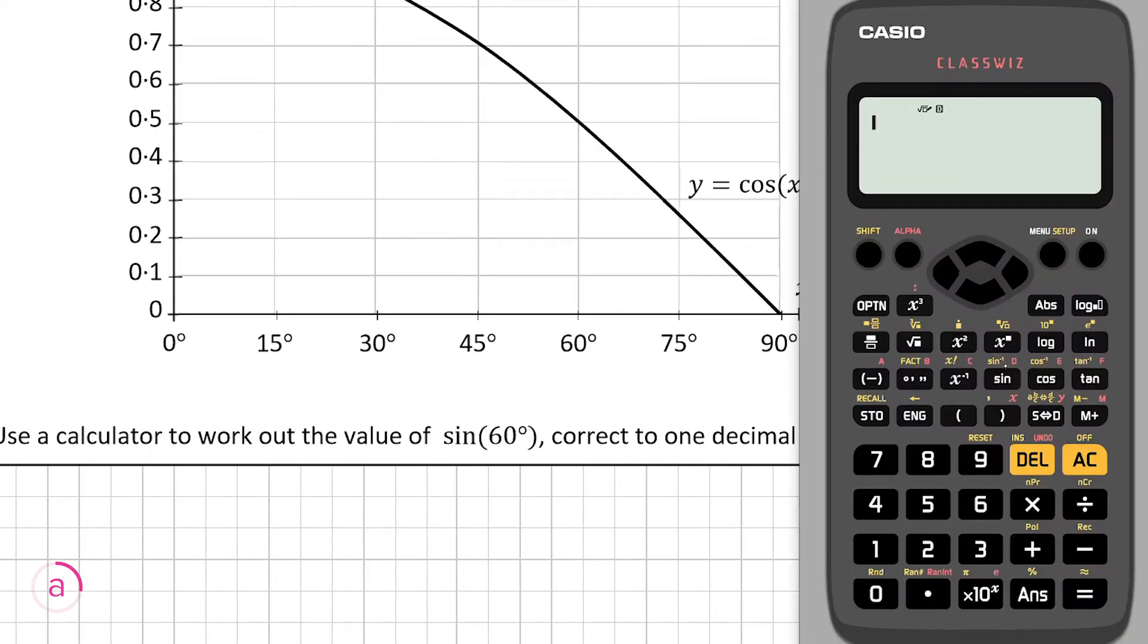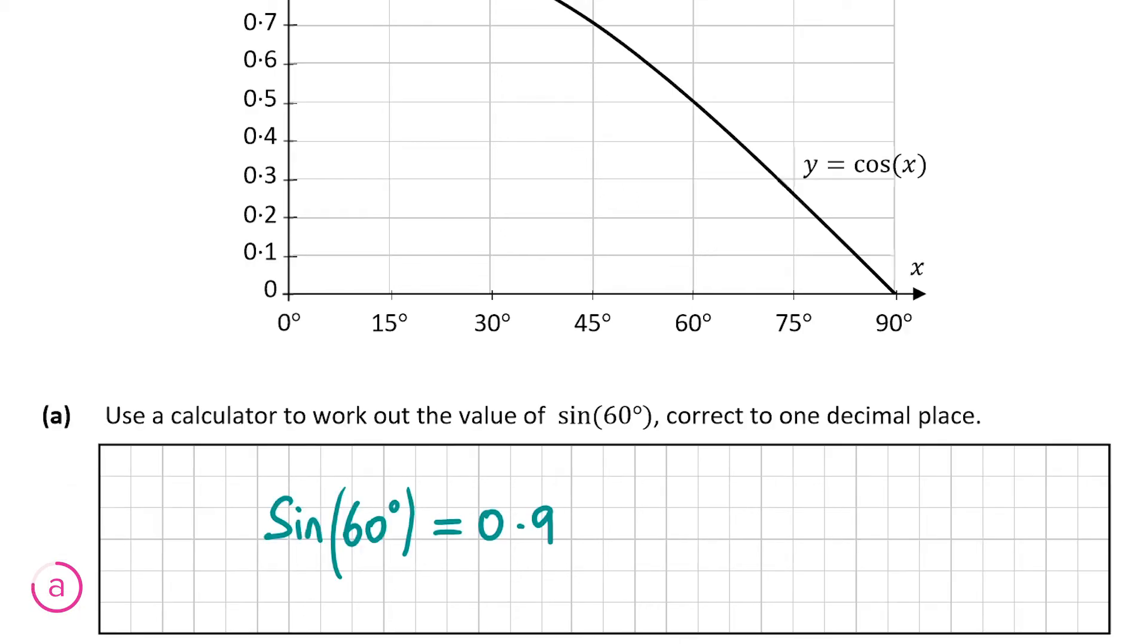We can just pop in sin(60) and that will give us the square root of 3 over 2, but it wants the answer as a decimal. So that's 0.8660254038 which correct to one decimal place is 0.9. Part a of the question is very straightforward and I don't think you'll have much issues with that.